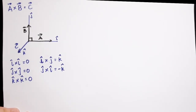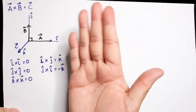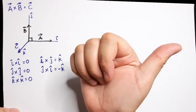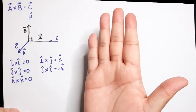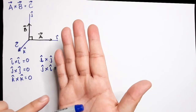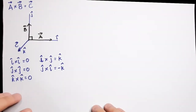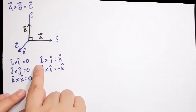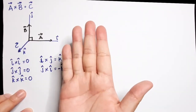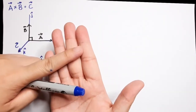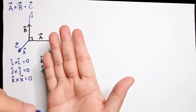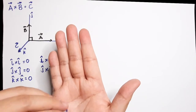We will use the right-hand rule. Your thumb points to the first vector, your four fingers point toward the second vector, and your palm points to the direction of the resulting vector. So for example, if the first vector is i on the x-axis and the second is on negative j, your palm faces outward — that is z, or k-hat.